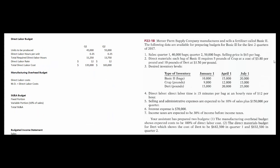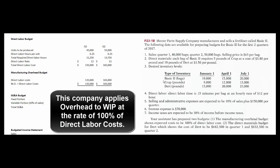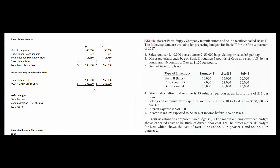Now let's do the manufacturing overhead budget. This problem tells us that manufacturing overhead is expected to be 100% of direct labor cost. There are lots of ways to apply overhead to work in process — direct labor hours, direct labor costs, machine hours, kilowatts of electricity, square footage of the factory — but this company uses direct labor costs. So the manufacturing overhead budget is simply equal to the direct labor costs, since we apply overhead at the rate of one times direct labor cost.